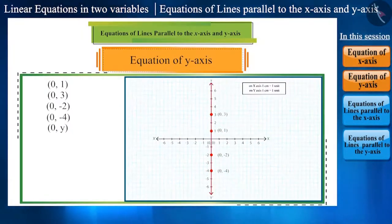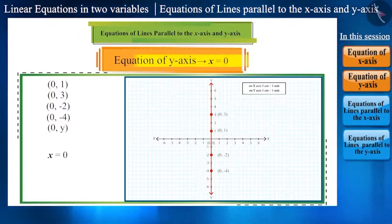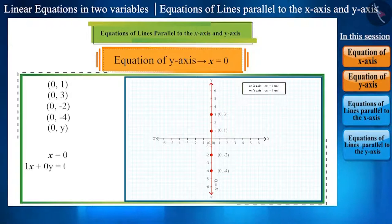That means, y-axis is the line with all the points lying on it having their x-coordinate as 0. That is, x is equal to 0, which itself is the equation of y-axis. We can write this as 1x plus 0y is equal to 0.